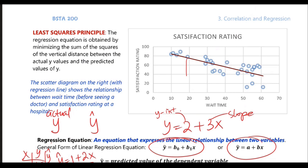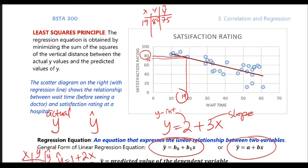Let me show you here. This point here, say x is 19 and y is 80 — so that actual point is (19, 80). But on the line, that same x value of 19 gives a y of 75. So the question is, why do we need the line?